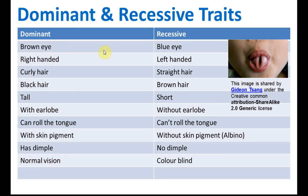Here is a list of dominant and recessive genes. Brown eye is dominant and blue eye is recessive. Right-handed is dominant and left-handed is recessive. Curly hair is dominant and straight hair is recessive. Black hair is dominant and brown hair is recessive. Tall is dominant and short is recessive. The ear with earlobes is dominant and without earlobes is recessive.